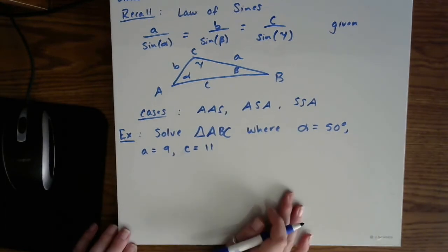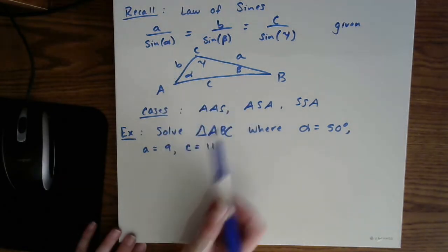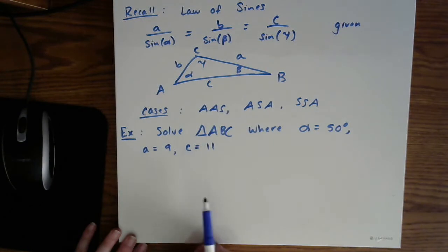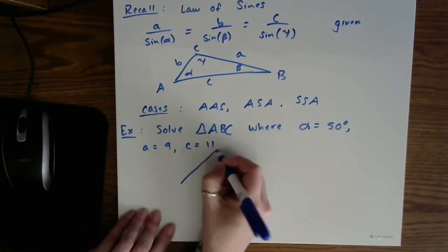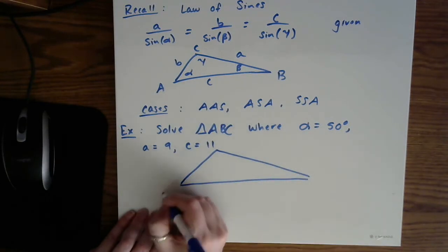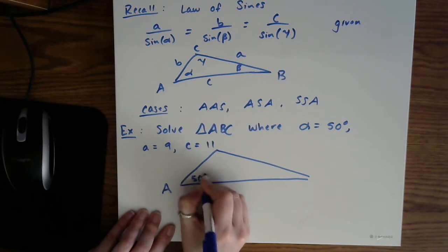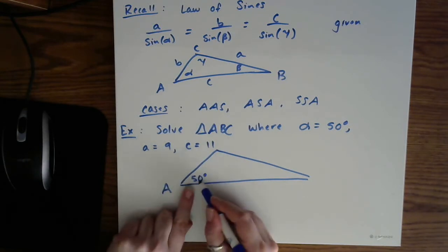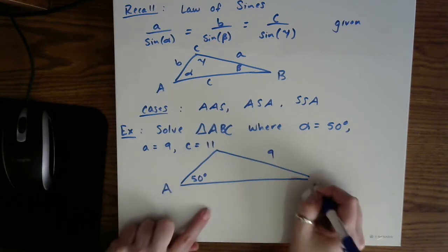So as we did before, let's first start by drawing the triangle. Now remember, when I draw this triangle, it is probably not going to be drawn to scale. So I will almost always draw this generic picture, fill in the pieces we have, but keep in mind it might not be scaled correctly. So here's my picture. Let's put A.